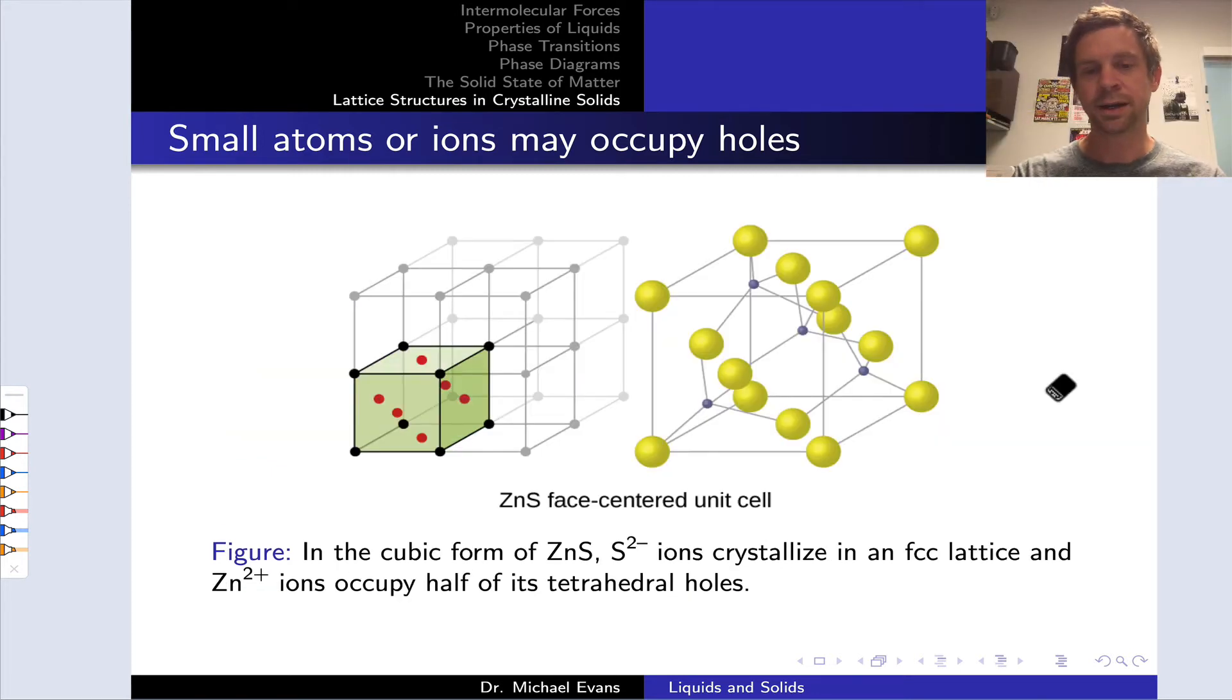An interesting example of a compound that contains atoms in tetrahedral holes is ZnS, zinc sulfide. In this compound, the zinc atoms form a face-centered cubic lattice, and the Zn2+ ions occupy the tetrahedral holes, but only half of the tetrahedral holes.